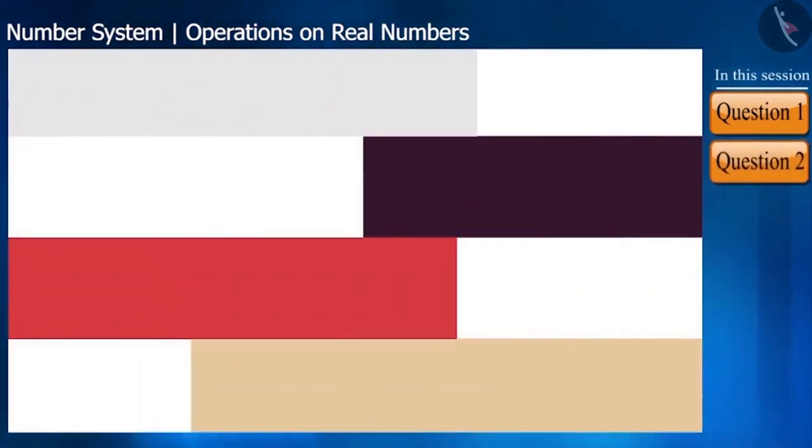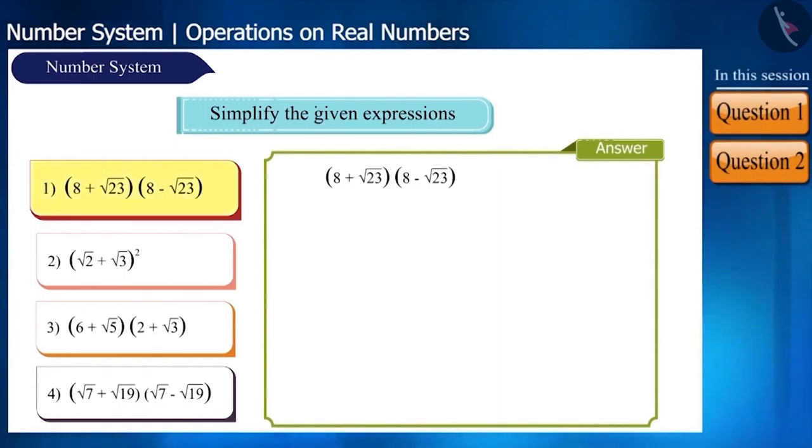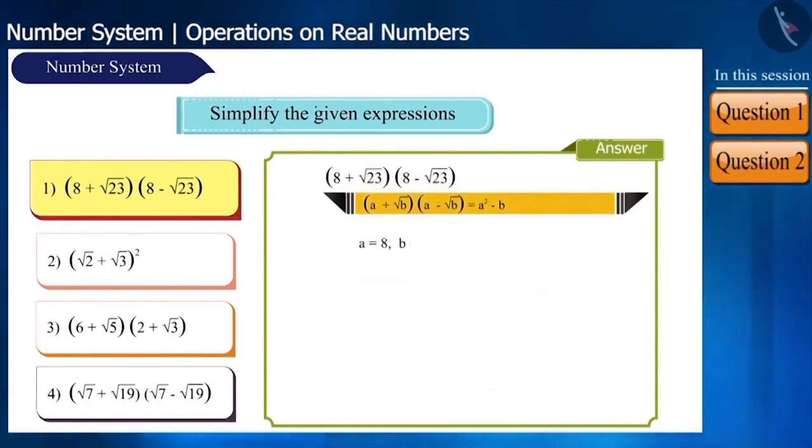Let's solve one more question. Simplify these expressions. See the first expression. This looks like the identity A plus root B, A minus root B. Here, A is equal to 8 and B is equal to 23. So let us use this identity A plus root B, A minus root B is equal to A square minus B to solve it. After solving, the answer is 41.